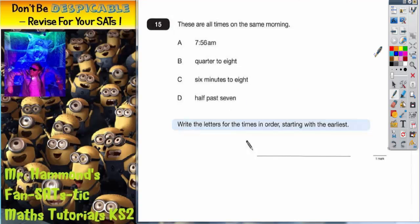Okay, question 15 says these are all times on the same morning. We've got 7:56 AM, quarter to 8, six minutes to 8, half past 7. Now what you'll notice is that these three are in words and this is in standard time format. It says write the letters for the times in order starting with the earliest.